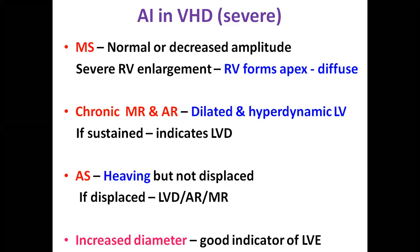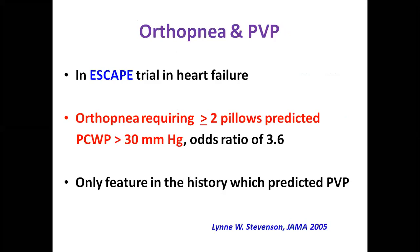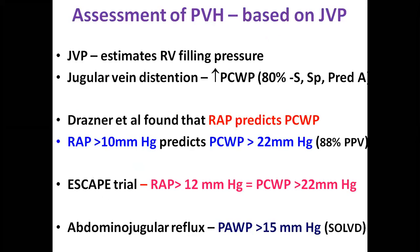How to assess pulmonary venous hypertension clinically: moderate pulmonary venous hypertension can be suspected when there is PND or Class II dyspnea; severe pulmonary venous hypertension when there is orthopnea or pulmonary edema. In the ESCAPE trial, orthopnea requiring 2 or more pillows predicted pulmonary capillary wedge pressure more than 13 mmHg. JVP estimates RV filling pressure — jugular vein distension in patients with left heart disease signifies increased pulmonary capillary pressure with high sensitivity, specificity, and predictive value. Drazner et al. found RA pressure more than 10 mmHg predicts PCWP more than 22 mmHg. Positive abdominal jugular reflux predicts PA wedge pressure more than 15 mmHg.